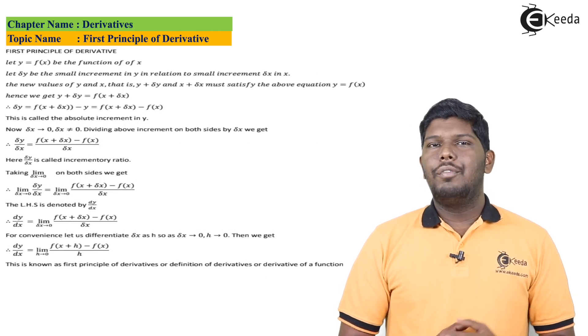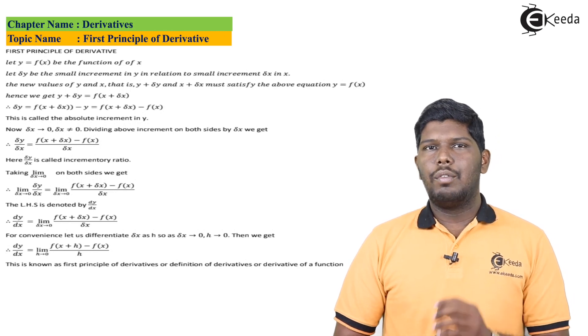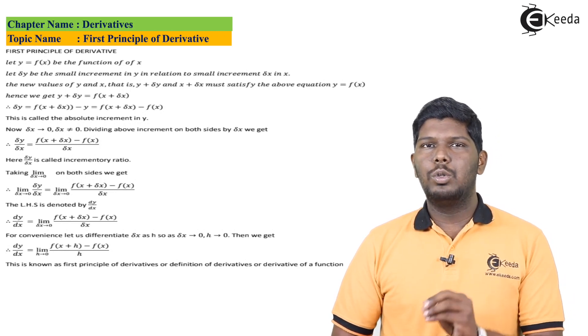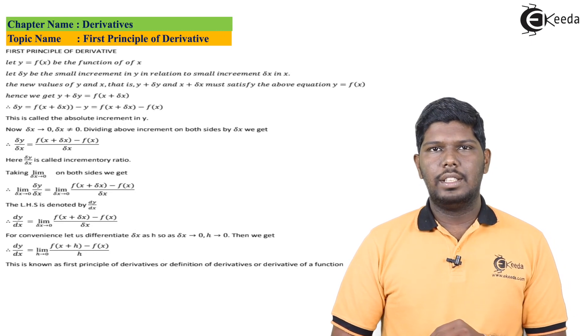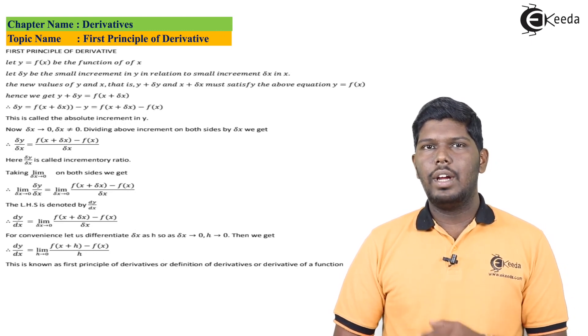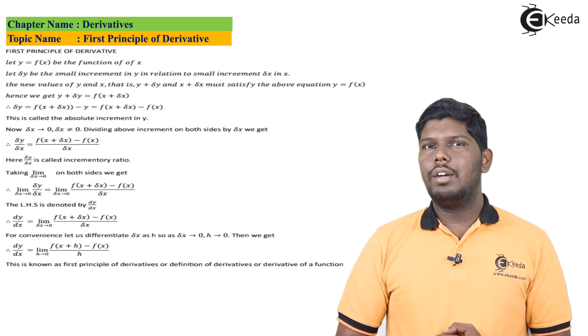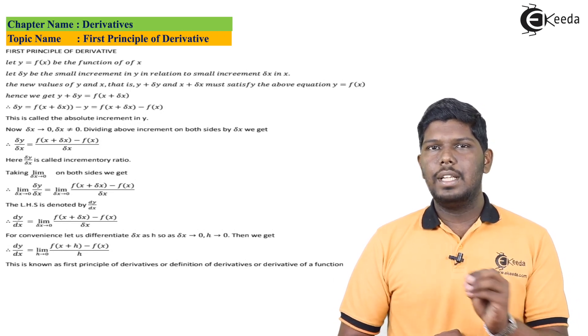So if I say we have the function y is equal to f of x, if I put both the new values of y and f of x, it should satisfy the same equation. The new values were y plus del y and the new values of x were x plus del x, so the equation that we are going to get will be y plus del y equals f of x plus del x.